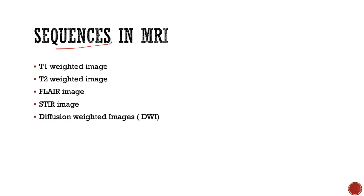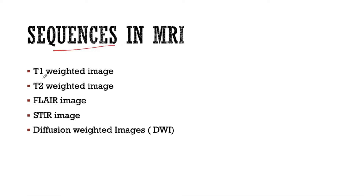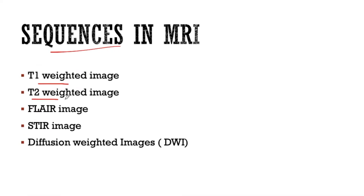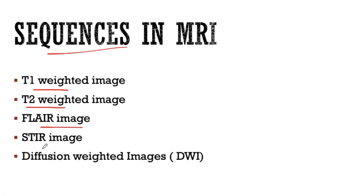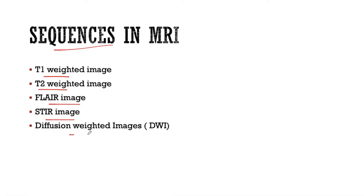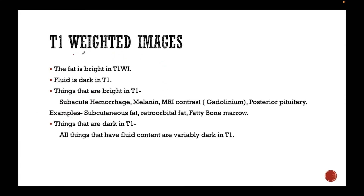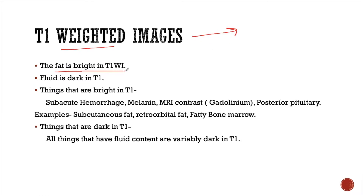The different sequences that we commonly use in MRI scan are T1 weighted image, T2 weighted image, FLAIR image, STIR image, and diffusion weighted images. I will be discussing in short about how to identify them and what their importance is. The T1 weighted image is a fat sensitive sequence — fat is bright in T1 weighted image.